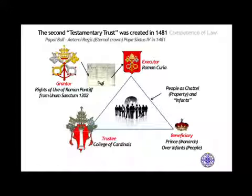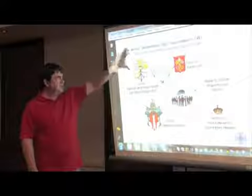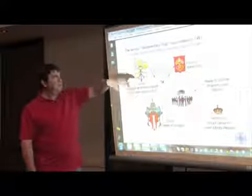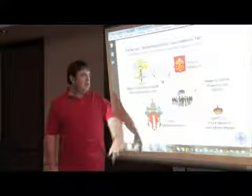The second trust gets created in 1481 via a papal bull called 'attorney regis' — the eternal crown. The grantor again is the pontiff, and it puts the curia back there as trustee.